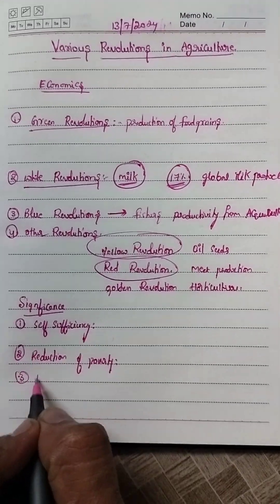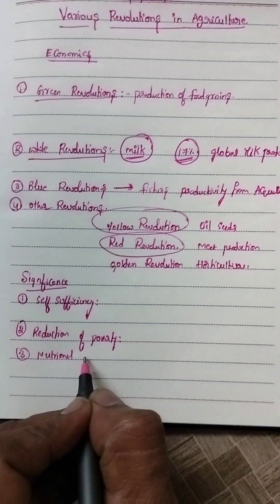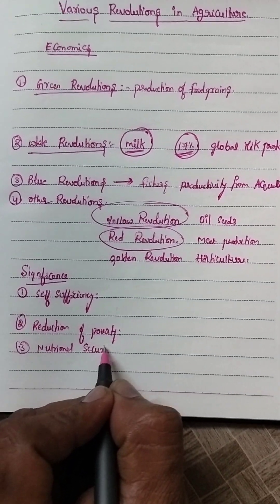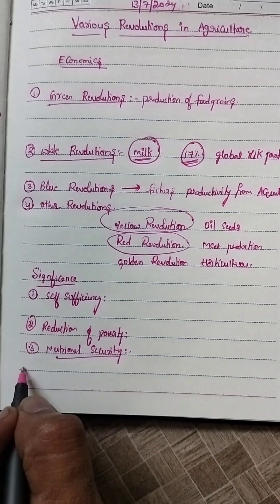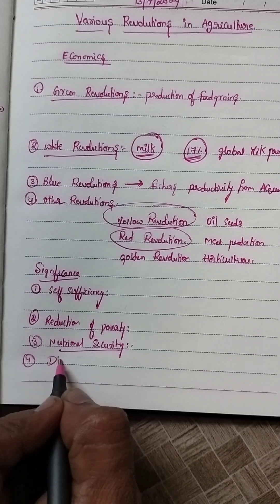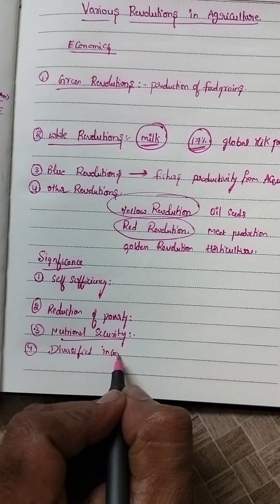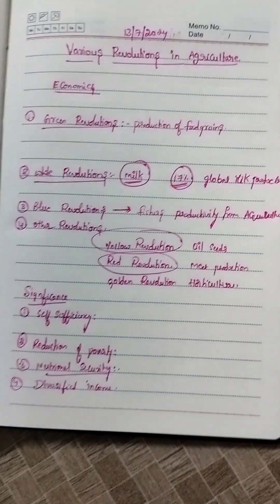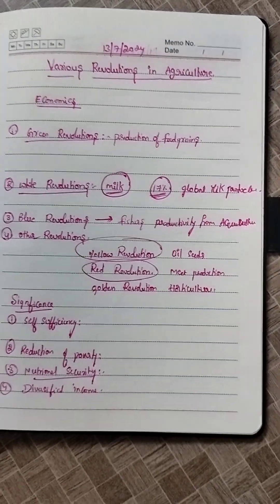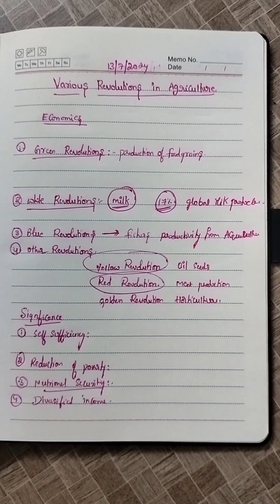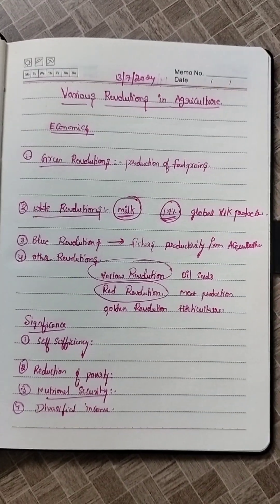Nutritional security is mainly linked with milk production. Additionally, farmers diversified their income — they are involved in poultry along with agriculture, meaning their income sources are diversified.